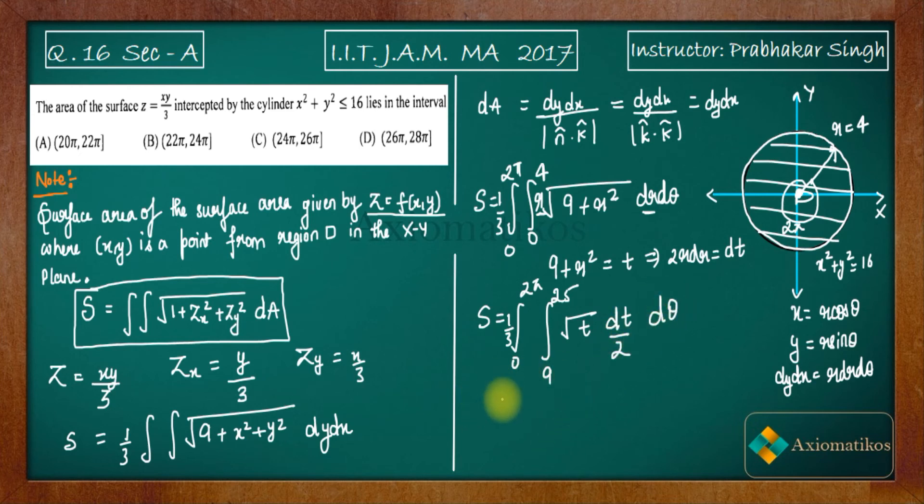Now you know how to integrate this. Integration will be T to the power 3 by 2 over 2 by 3. So what you will get? 1 by 3, 0 to 2π, T to the power 3 by 2, 2 by 3. This is what you will get. What are the limits? It's from 9 to 25 dθ. So now integration answer will be, if you will place all of these limits. So what you will get? Let us calculate.